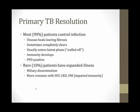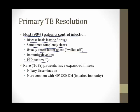When primary tuberculosis infection resolves, about 90% of patients control the infection and the disease heals, leaving some fibrosis. Sometimes it completely clears, but often it enters a latent phase — no active infection, but the patient could get sick later. When this happens, immunity develops and the PPD test will be positive.